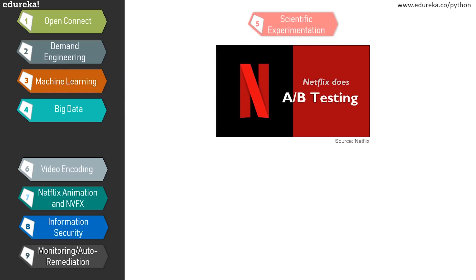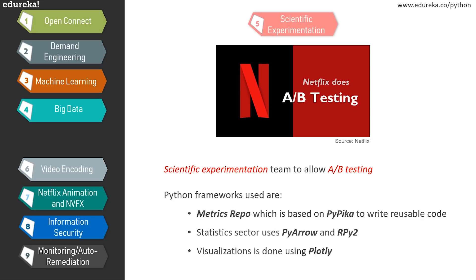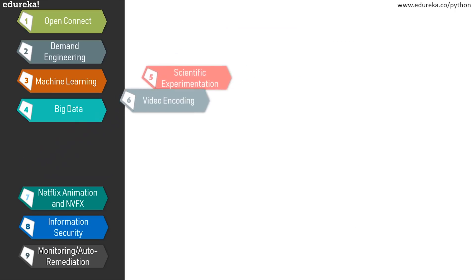The scientific experimentation platform is created for experimentations and to allow A/B testing. A/B testing, also called split testing, deals with comparing two versions and figuring out the better performing variation. The scientific experimentation team can also present new innovations in data statistics and visualization. The Python framework implemented here is Metrics Repo, which is based on PyIca and allows writing code to calculate statistics in either Python or R. Plotly is used for visualizations.